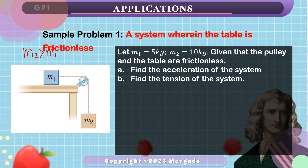Once we release M1, we can say that M1 will move to the right or accelerate to the right, while M2 will accelerate downwards. Given that the two masses are connected by a single rope, we consider this whole setup as one system. Since both masses are connected by a single string, they must accelerate at equal magnitudes — whatever is the acceleration of mass 1, that is also the acceleration of mass 2. We will determine the acceleration of the system and the tension, which is the contact force on the rope connecting the two masses.